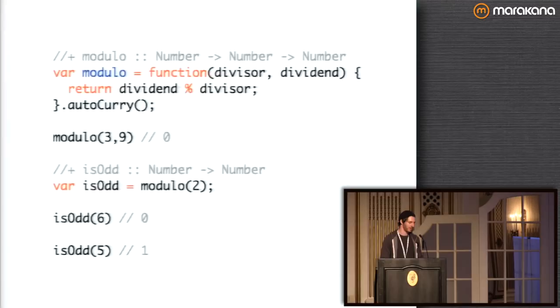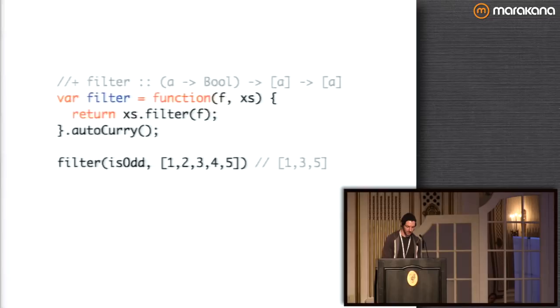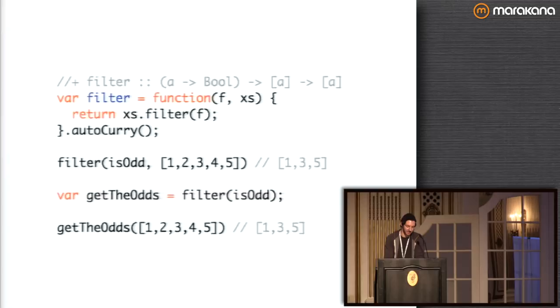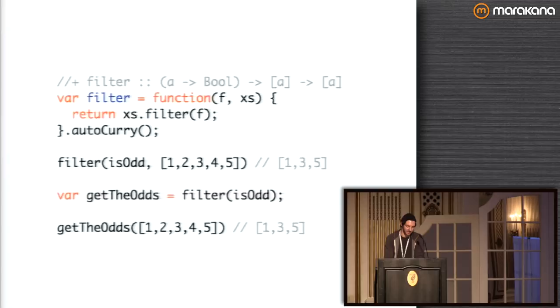That's a pretty cool application. We've got a new function that's pretty useful just by partially applying modulo. Here's another example — we've got this function filter, and all it's doing is wrapping the native filter. But if we call it with isOdd and partially apply it, we get a whole new function back that'll always get the odd numbers out of an array. What's crazy is isOdd is partially applied itself — so you have a partially applied isOdd inside a partially applied filter, and we've got a third useful function out of that. You're building new functions by giving functions arguments.